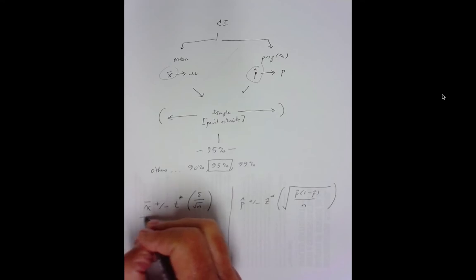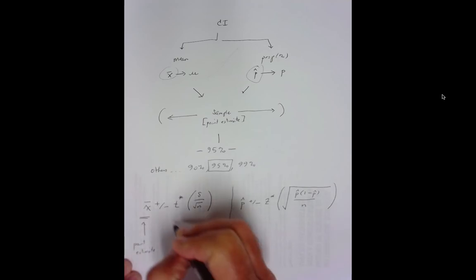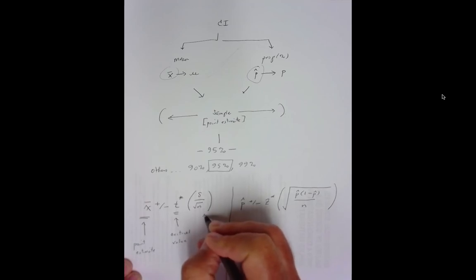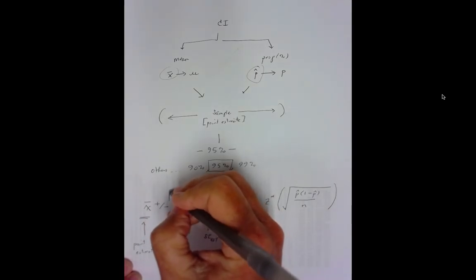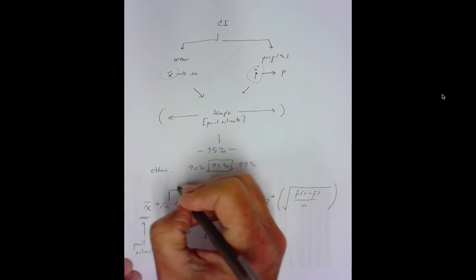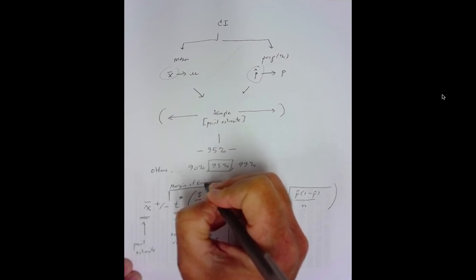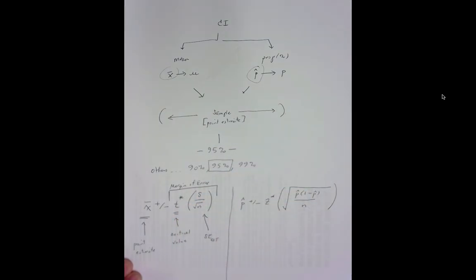Now, what's this thing called right here? This is called our point estimate. What's this thing called? This is called our critical value. What's this thing called? It's the standard error of our estimate. All of this over here is called the margin of error. Let me see if we can get this a little bit clear. Okay.